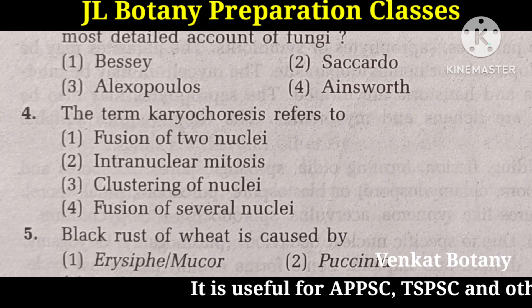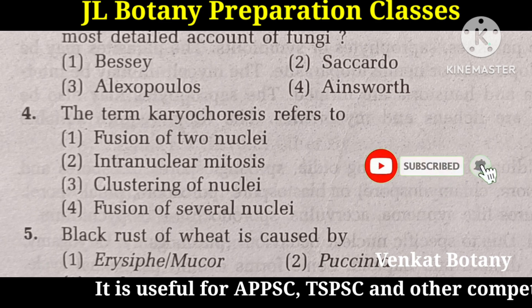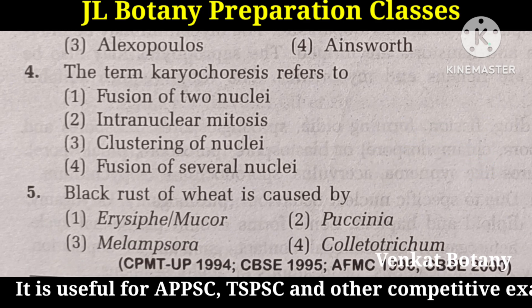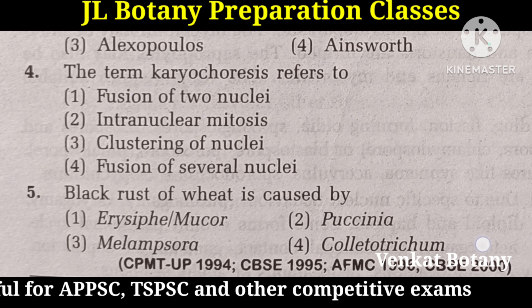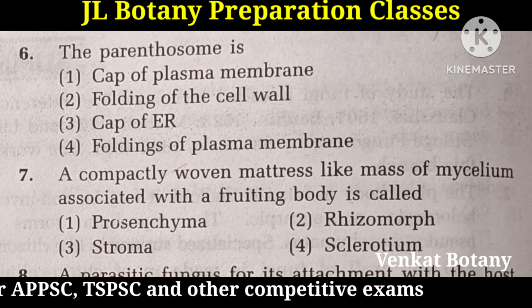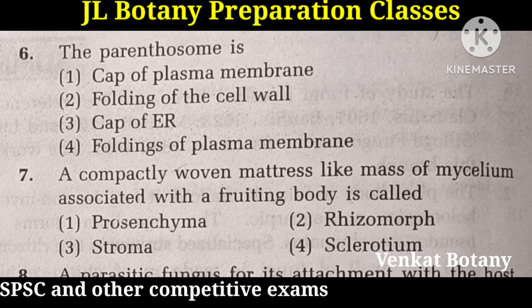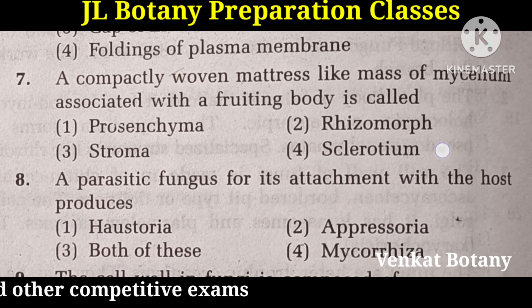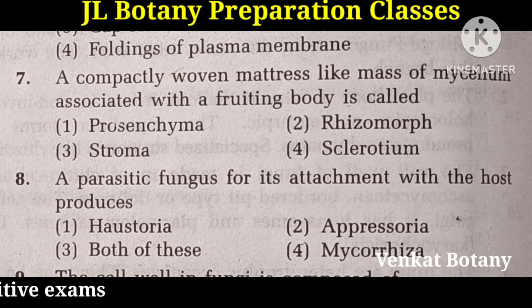The term cariocoresis refers to intranuclear mitosis. Black rust of wheat is caused by Paxinia. The parenthosome is a cap of ER. A compactly woven mattress-like mass of mycelium associated with a fruiting body is called Stroma.